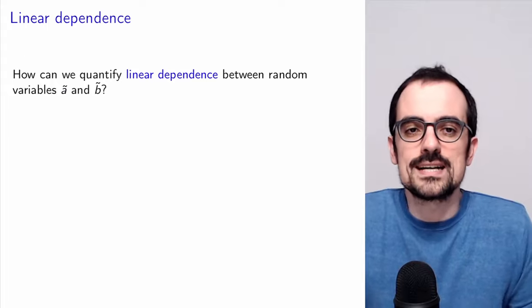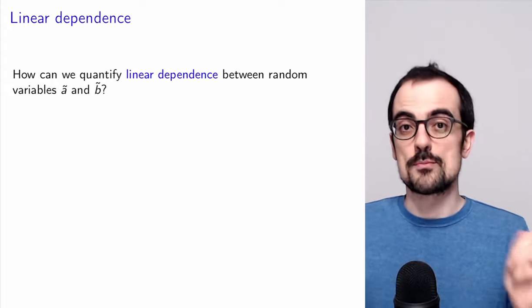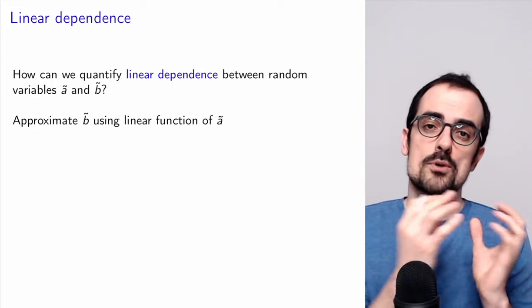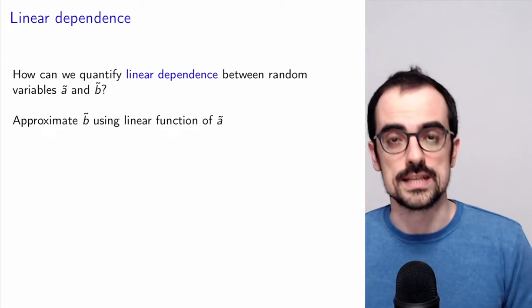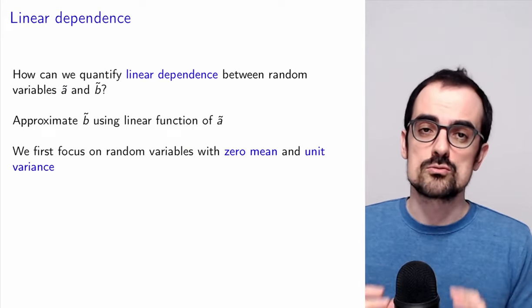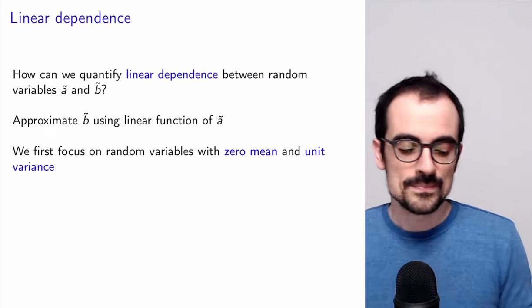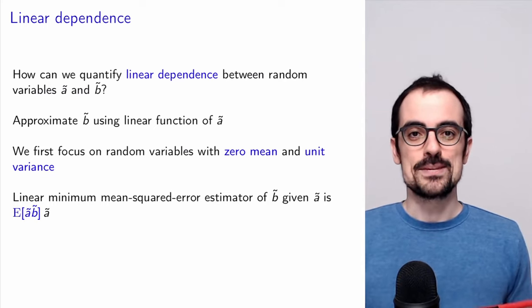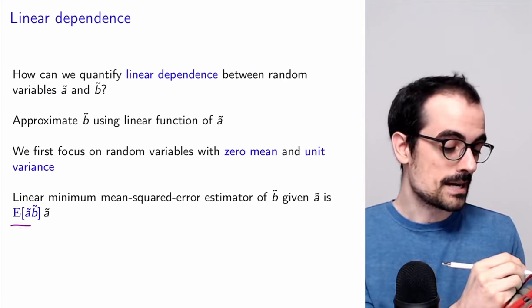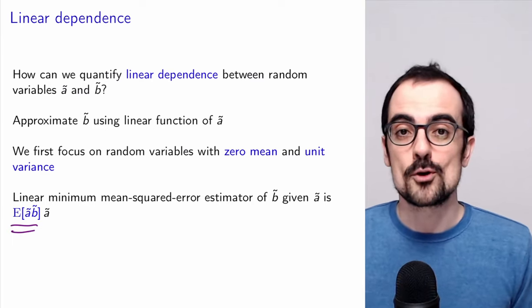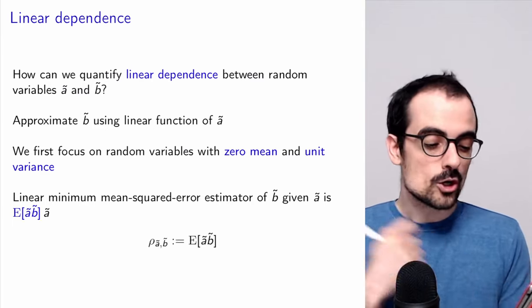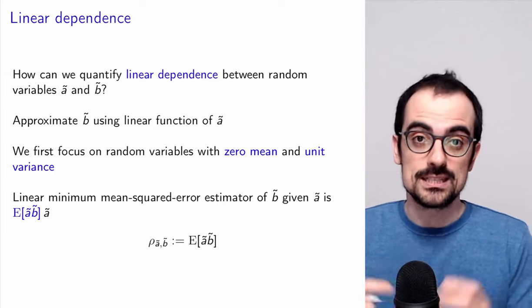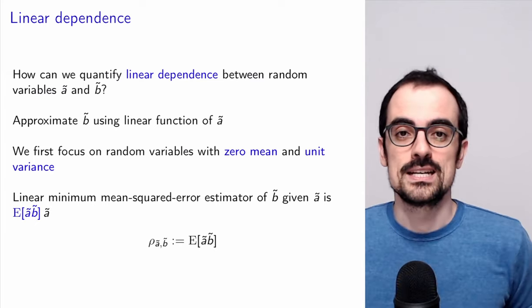How can we quantify the linear dependence between two random variables representing uncertain quantities of interest? We can see whether we can approximate one quantity as a linear function of the other. If we focus on random variables with zero mean and unit variance, the best linear estimator of B given A can be obtained by scaling A by the mean of the product between A and B. We call this quantity the correlation coefficient between A and B.